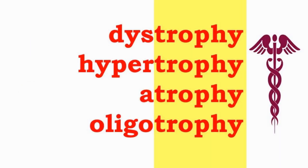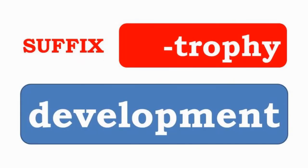Dystrophy, hypertrophy, atrophy, and oligotrophy have the suffix -trophy, which indicates nourishment or development.